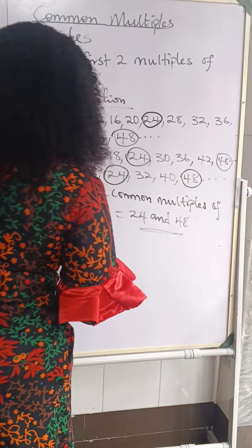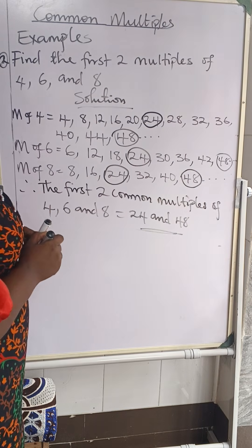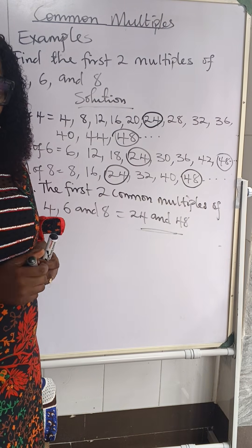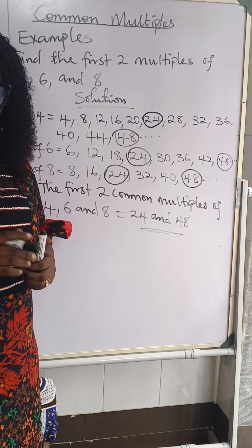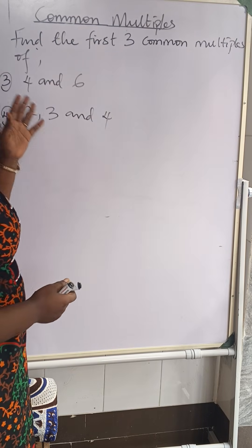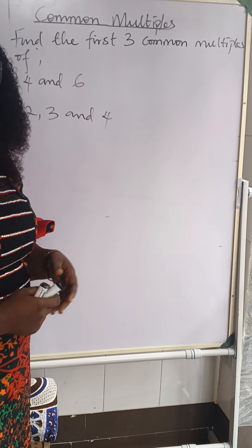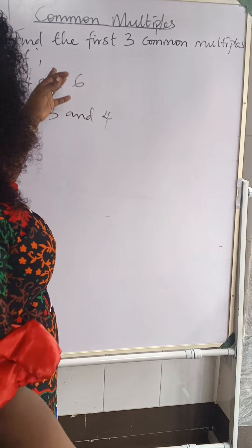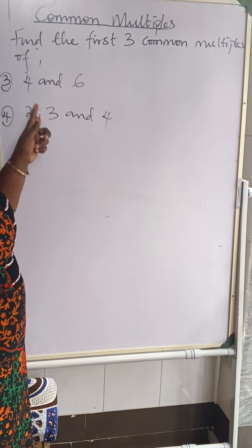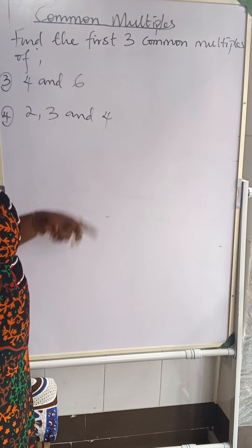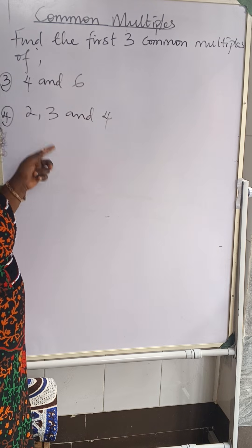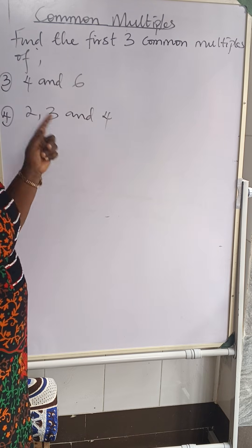Let me give you your own activity to keep you busy. Find the first three common multiples of four and six, and the second activity is to find the common multiples of two, three, and four.